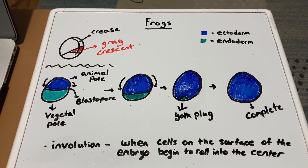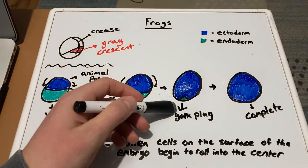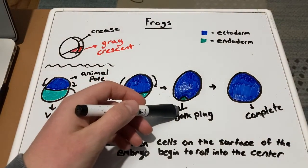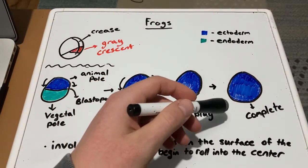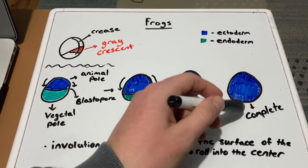After these cells move into the interior of the embryo, they move away from the blastopore and toward the animal pole, organizing the layers so that the endoderm is on the inside. Finally, there is a yolk plug near the ventral pole of the embryo, and this is now covered by ectoderm cells, completing the layer.